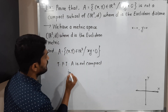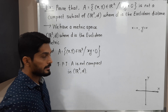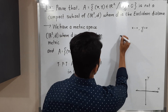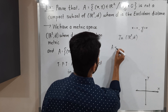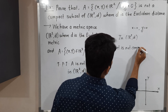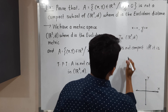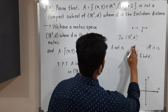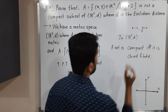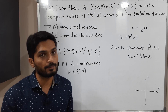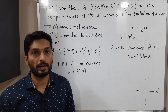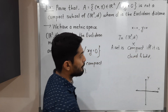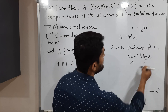We have to prove A is not compact in metric space R²D. There is one standard result in R²D: a set is compact if and only if it is closed and bounded. So to prove A is not compact, it is enough to prove either the set is not closed or the set is not bounded.